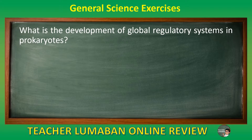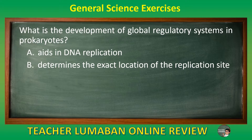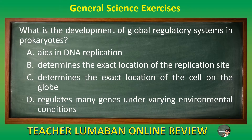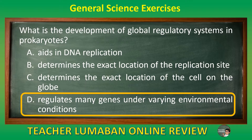What is the development of global regulatory systems in prokaryotes? Letter A aids in DNA replication. Letter B determines the exact location of the replication site. Letter C determines the exact location of the cell on the globe. Letter D regulates many genes under varying environmental conditions. The correct answer is letter D: regulates many genes under varying environmental conditions. The development of global regulatory systems in prokaryotes regulates many genes under varying environmental conditions.